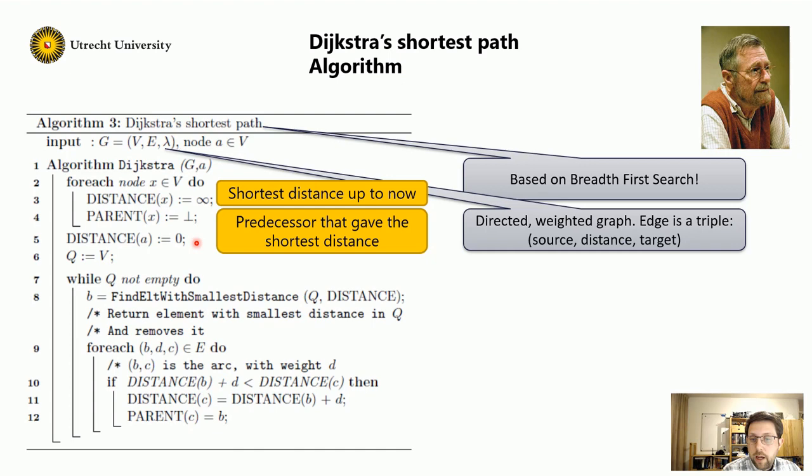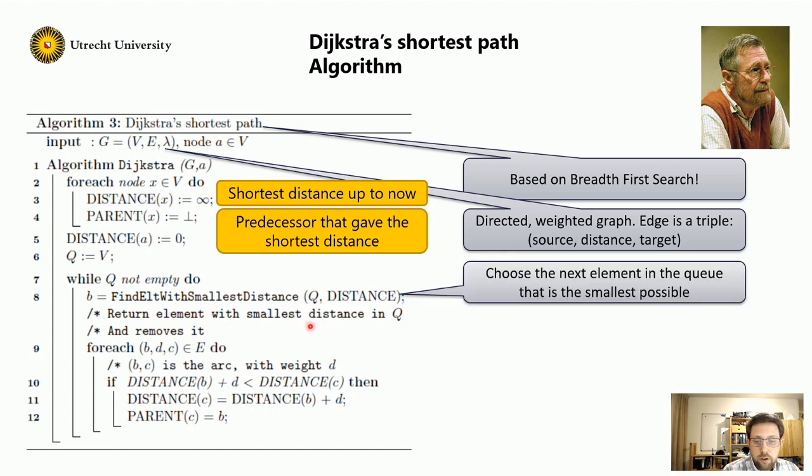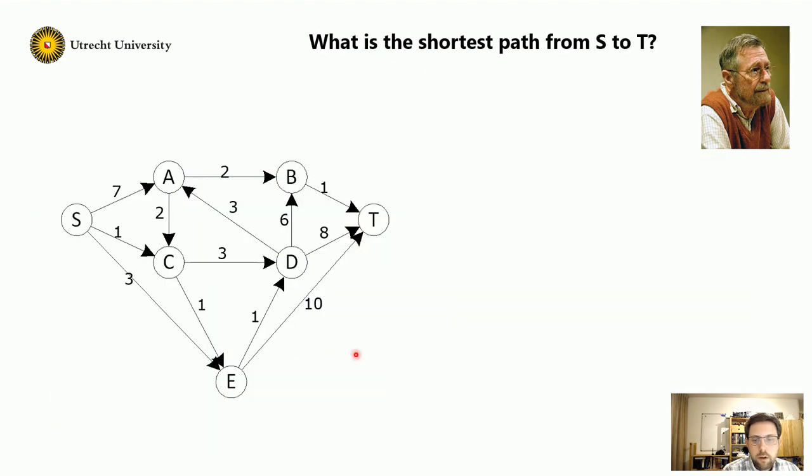To start, we start at node A, so we give distance A zero. And we want to traverse all vertices, so we make some queue and we put all vertices in it. And while this queue is not empty, we are going to find the element with the smallest distance, so the next element in the queue that is as small as possible. And we call this node B. And then we are going to look for each edge that starts at B to some node C with some distance. So B C is the arc and the weight is D. So we are going to check, if the new distance, namely the distance to node B plus the distance of the arc D, if that is smaller than the distance in C, then we update the distance C with the new distance, namely distance B plus D. And we update the parent accordingly, namely to B. And we repeat this until the queue is empty. So this is the algorithm.